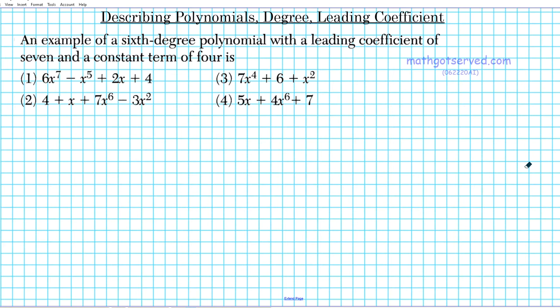So let's take a look at the question: an example of a sixth degree polynomial with a leading coefficient of seven and a constant term of four is. We have four options here to select and determine which one is correct. We're going to refer to our knowledge of what the degree of a polynomial is and what the meaning of the leading coefficient is.